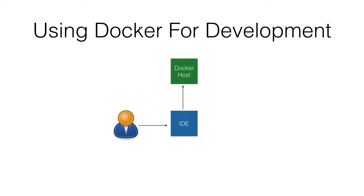Generally, how do we do development? As a developer, we have our IDE on which we code, and then deploy our application using the IDE. Here, what we're going to do is introduce Docker in between. Whatever development we do through our IDE, that IDE will deploy the application on a Docker host so we can test locally. Once we test locally, we can push the code to GitHub.